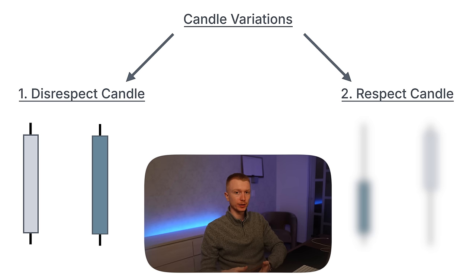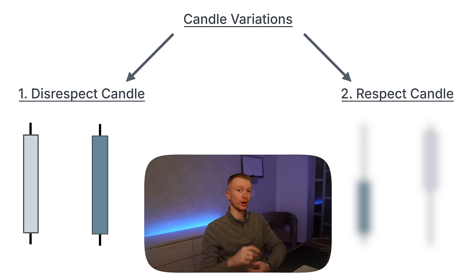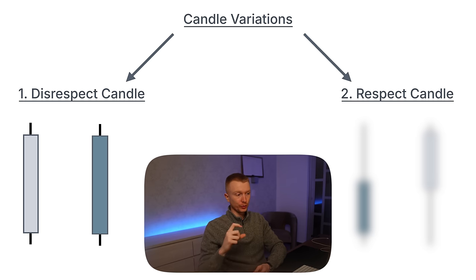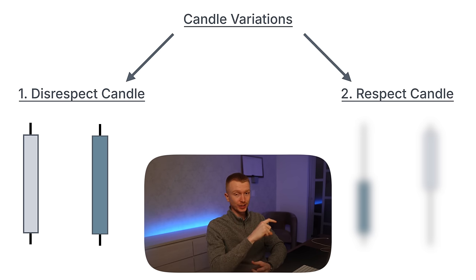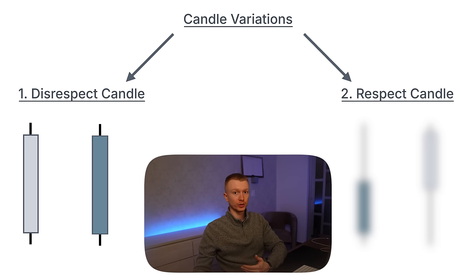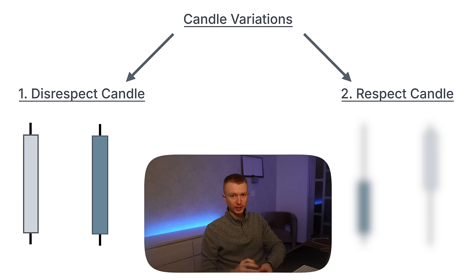If you want to make this mechanical, you can put both the top wick and the bottom wick on top of each other — that creates a certain length. Then grab the body of that candle and measure which one is longer: is the body longer or are the two wicks combined longer? If the body is longer, that creates a disrespect candle.